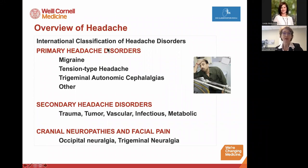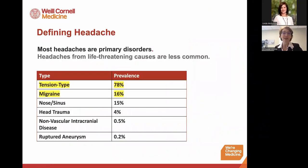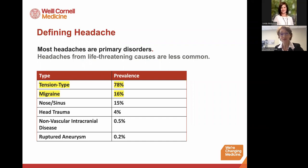Today we're going to focus on the most common primary headache disorders — migraine, tension headache, and cluster headache — and then talk about secondary disorders and how to look for those as well. Tension-type headache is actually the most common headache disorder, affecting over 70% of the population, but you're less likely to see it in clinical practice. Many secondary headaches mimic tension-type headache, so if a patient says they have tension-type headache, they're probably having something else, whether it be migraine or another secondary headache. Migraine affects about 15% to 16% of the population, and the things that people worry about most are the least common.